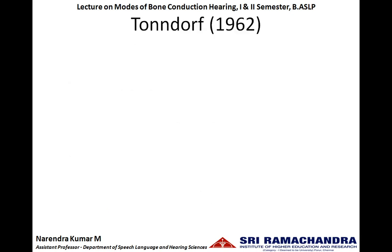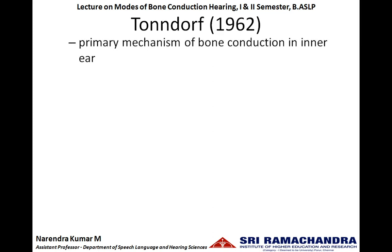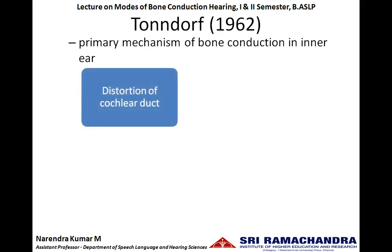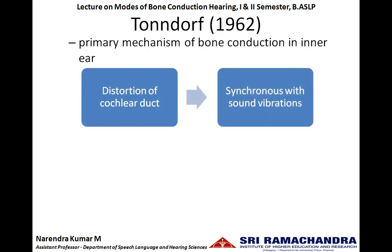Tonndorf in 1962 stated that the primary mechanism of bone conduction in the inner ear is not because of compression mode, but because of distortion of the cochlear duct. This distortion of the cochlear duct happens in synchrony with the incoming sound vibrations.